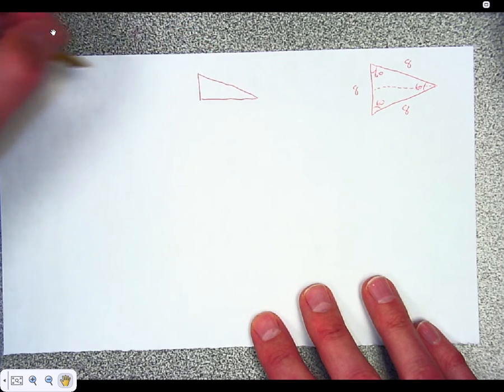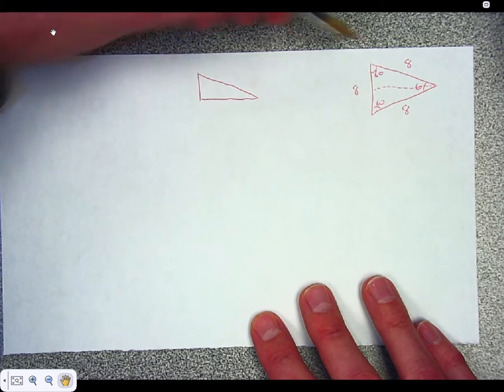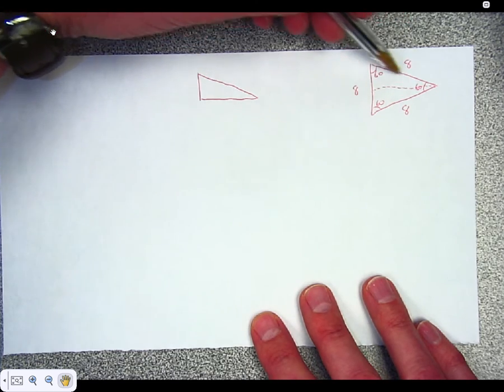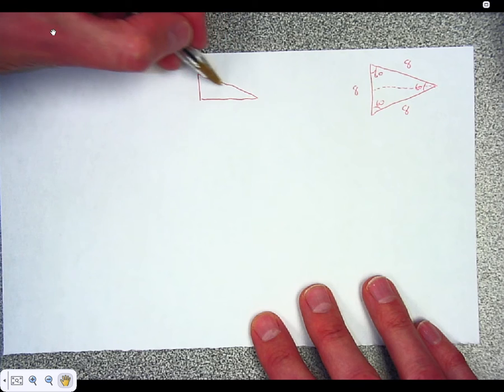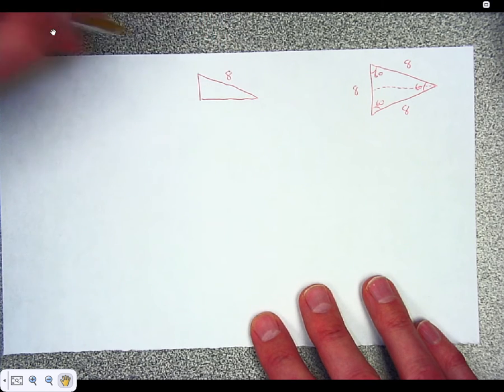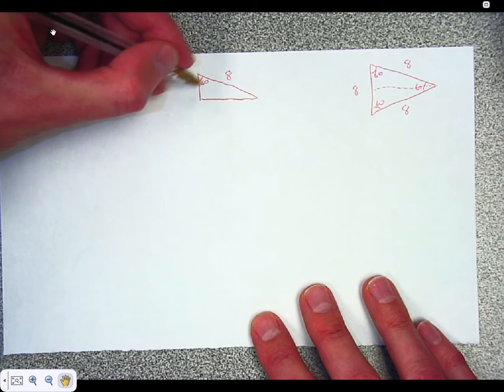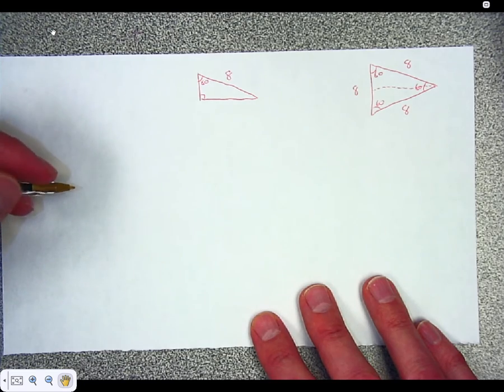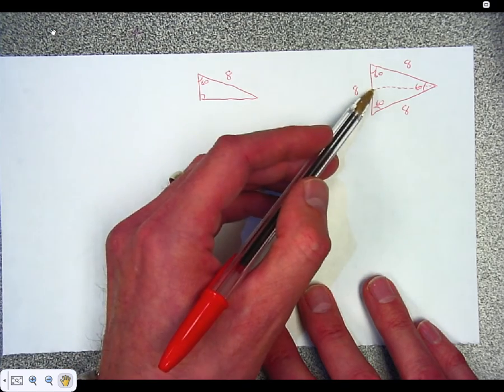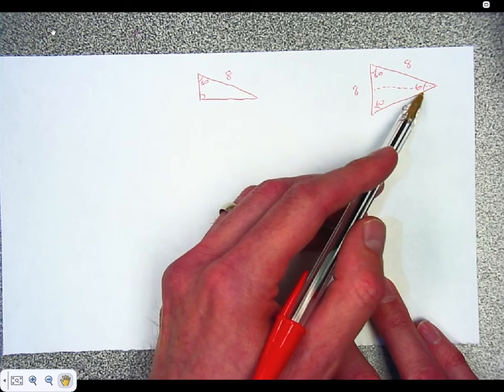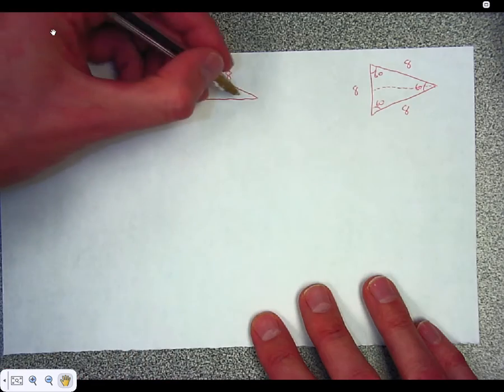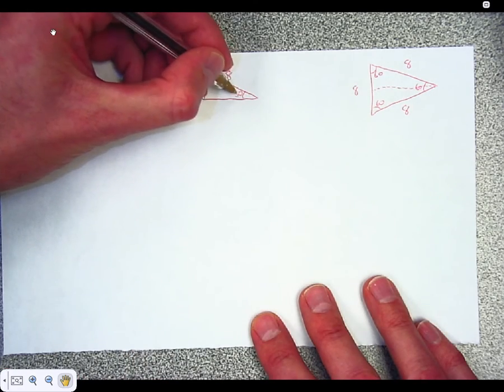This side here is still 8. So this side right there, that's 8. This is still 60 degrees. This is now 90 degrees, because I cut it right here at a 90 degree angle. And since I cut this angle in half, this angle is now 30 degrees.